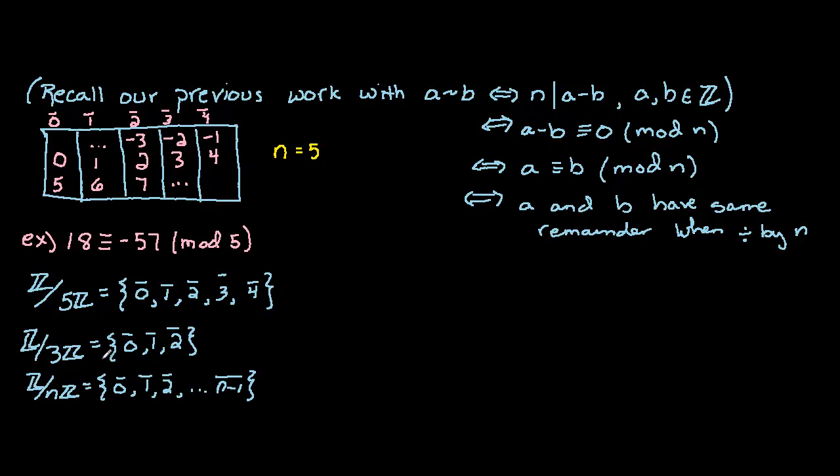So we can now define addition and multiplication on Z mod nZ. Let's take a look at that. Here's our first definition: we have a bar plus b bar equals a plus b bar. In other words, as long as you take a representative of the equivalence class...